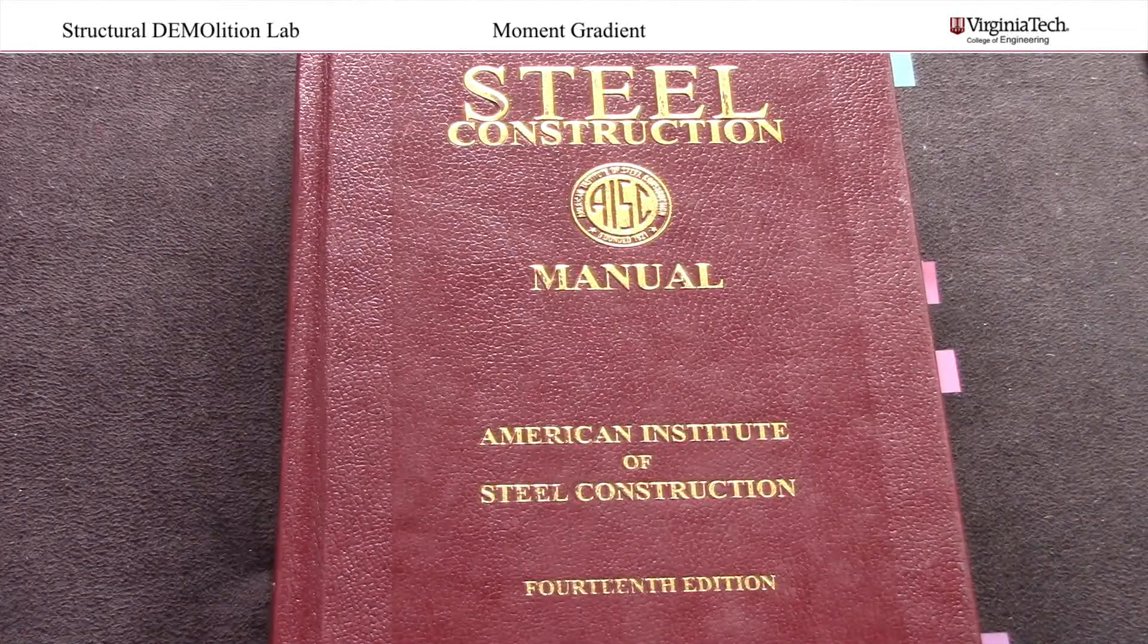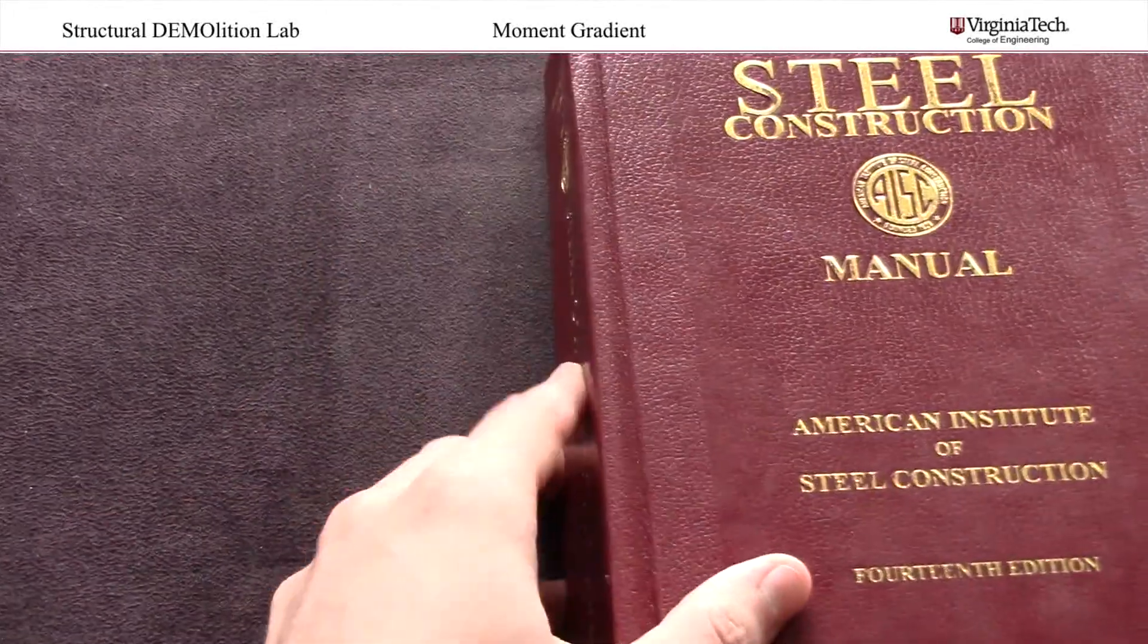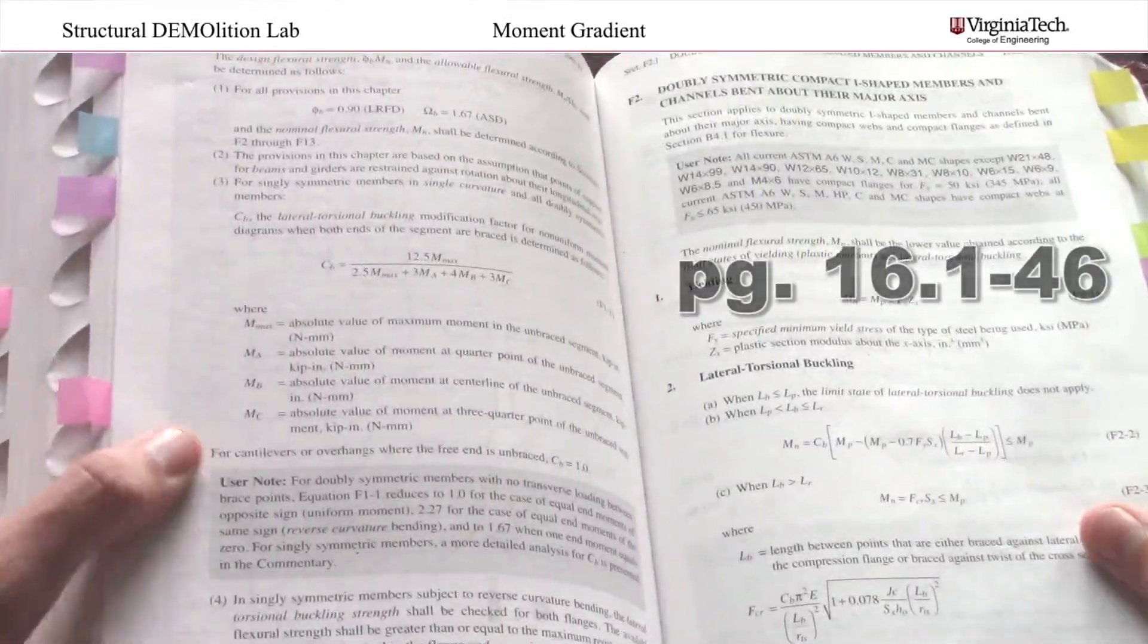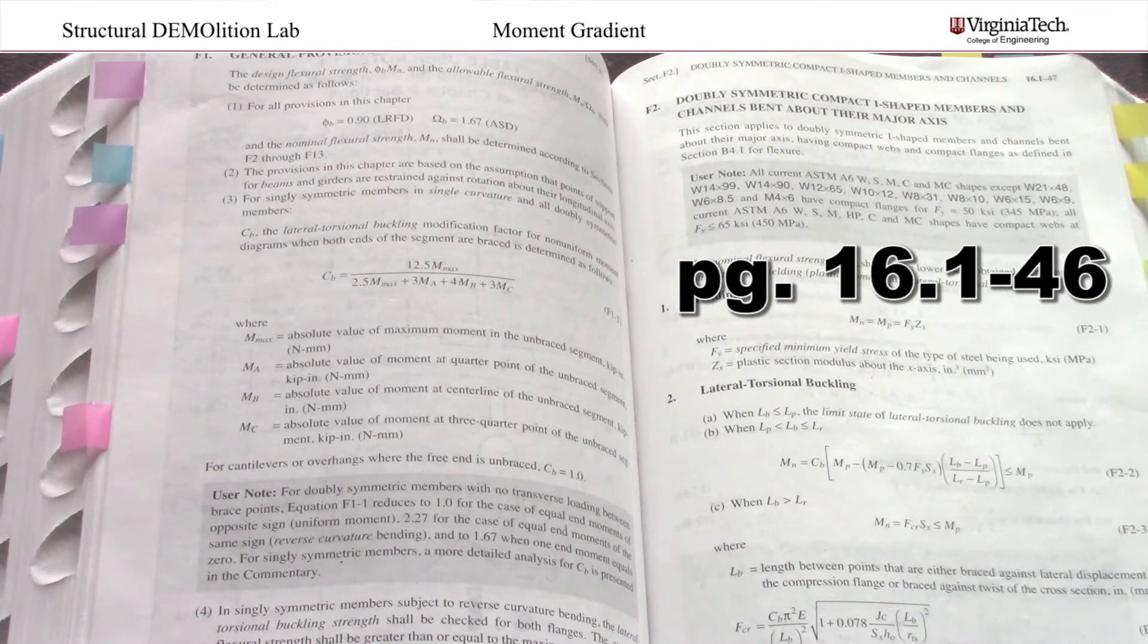Let's take a look at the AISC specifications to determine how to calculate the CB factor. If you flip open to chapter F on page 16.1-46, you will see an equation for this factor in the middle of the page.